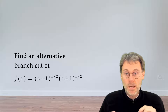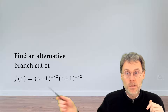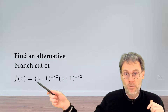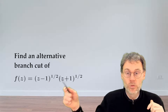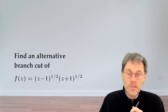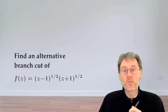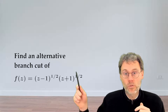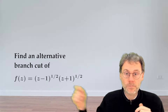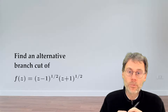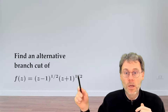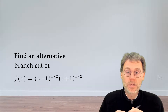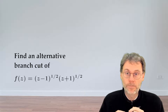In a previous exercise, we looked at this particular function, which consists of a product of two square roots. If you use the conventional choice of branch cut for each of these different factors, then you end up with a branch cut for the whole function of the line segment between minus 1 and plus 1.